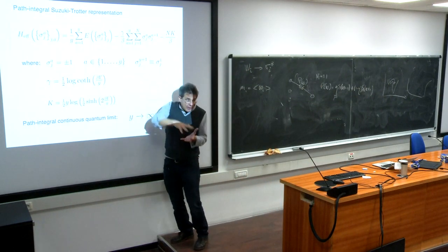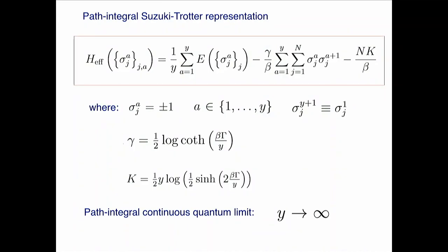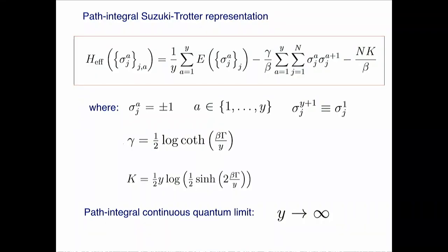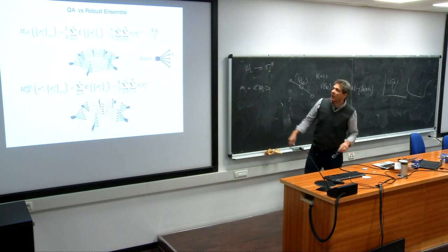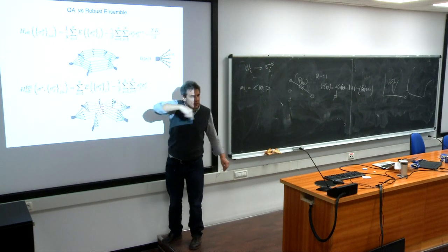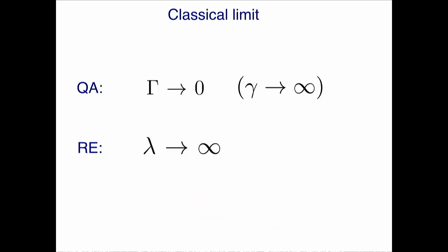By sampling from this Hamiltonian with a Markov process, you get the probability distribution from the density matrix. The coupling between different replicas is ferromagnetic. When gamma goes to zero, quantum effects vanish, the coupling becomes infinite, all replicas collapse, and you recover the classical system. There are very strong analogies between the Suzuki-Trotter representation — many systems coupled through nearest-neighbor interactions — and the robust ensemble I described yesterday.